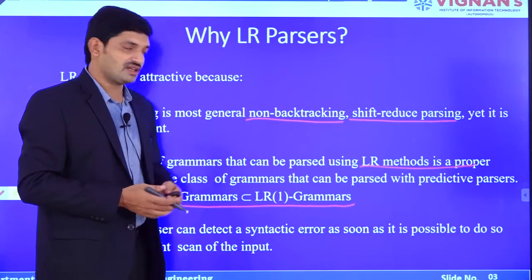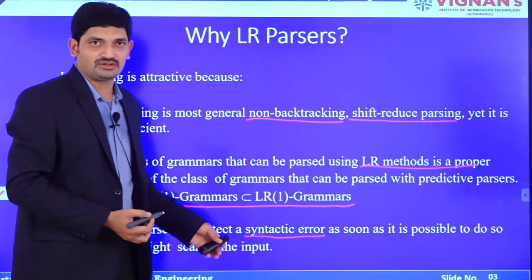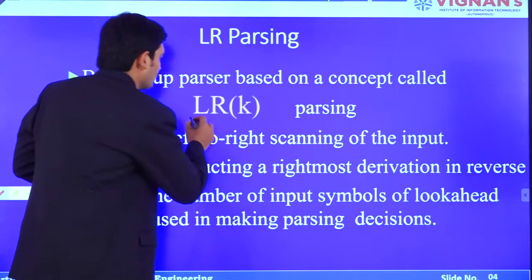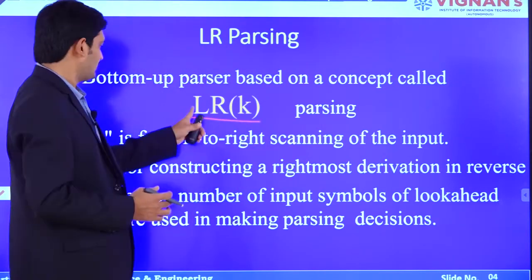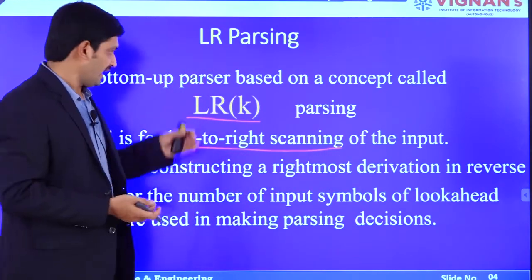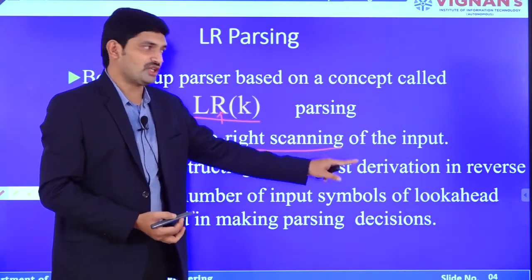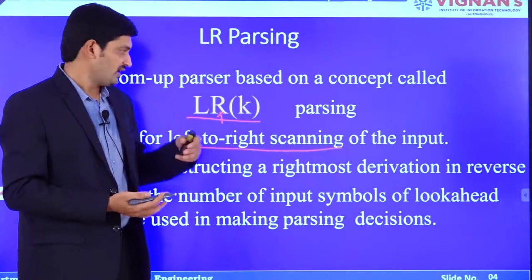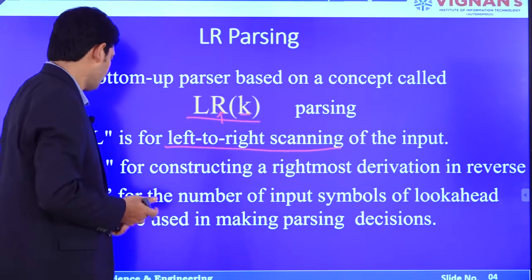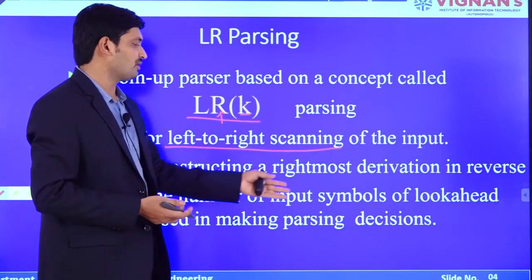An LR parser can detect a syntactic error, which is one important feature of this parsing. It is a bottom-up parser based on the concept known as LRK parsers. Here, L stands for left-to-right scanning of the input string, R stands for constructing the rightmost derivation (in reverse), and K stands for the number of lookahead input symbols used in making parsing decisions.